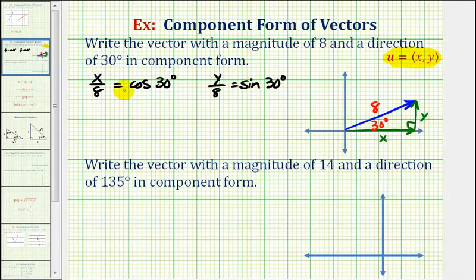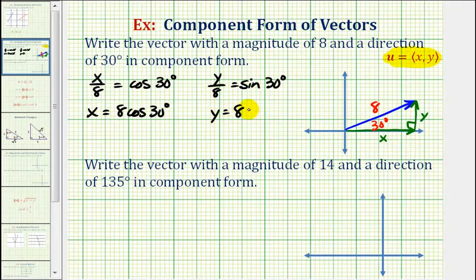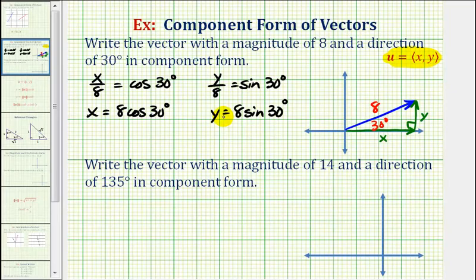Notice if we multiply both sides by eight, we have x equals eight cosine 30 degrees, and y equals eight times sine 30 degrees. These are actually the formulas that we use to find the component form of a vector: x is going to be equal to the magnitude times cosine theta, and y is equal to the magnitude times sine theta.